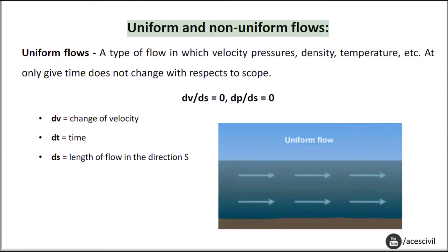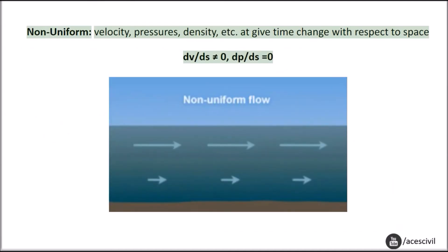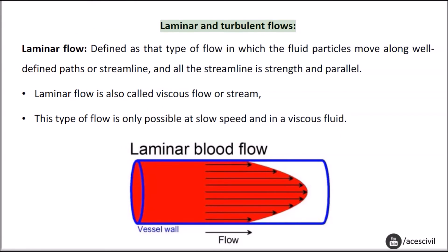Uniform and non-uniform flows. Uniform flow is a type of flow in which velocity, pressure, density, temperature, etc. at only a given time does not change with respect to space. dv/ds = 0, dp/ds = 0. Non-uniform flow: velocity, pressure, density, etc. at a given time change with respect to space. dv/ds ≠ 0, dp/ds ≠ 0.